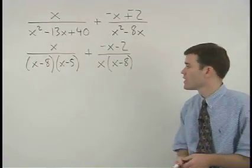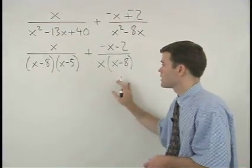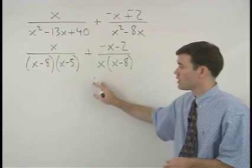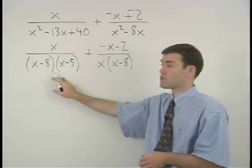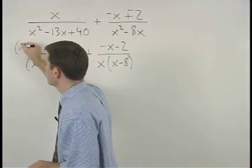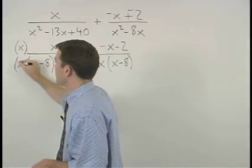So our common denominator is x minus 8 times x minus 5 times x. And since our first denominator is missing an x we multiply top and bottom of this first fraction by x.